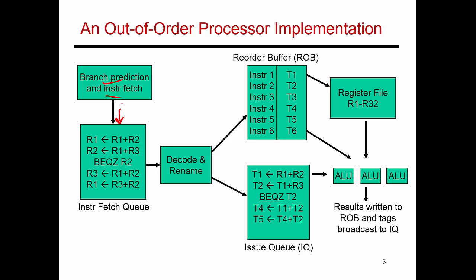The instruction fetch queue is a buffer where I'm trying to run ahead of where the program is, just going to keep making guesses of what I need to execute next, and I'll start bringing in the next set of instructions. Then there is a decode and rename unit, which takes these instructions, does some renaming, and then places those instructions into two different structures: the issue queue and the reorder buffer.